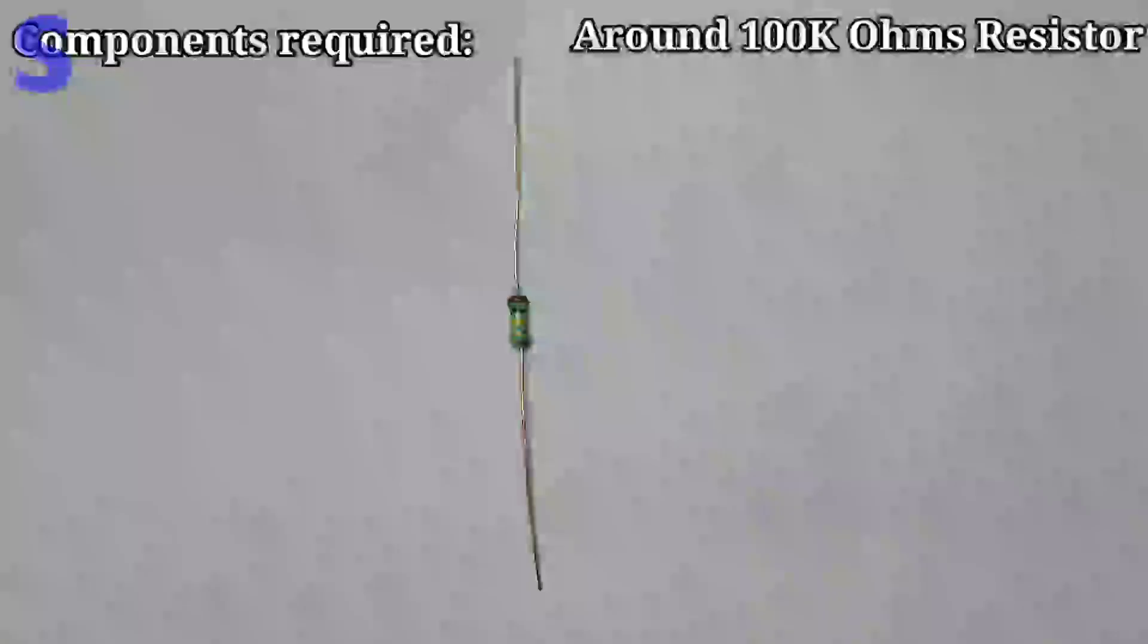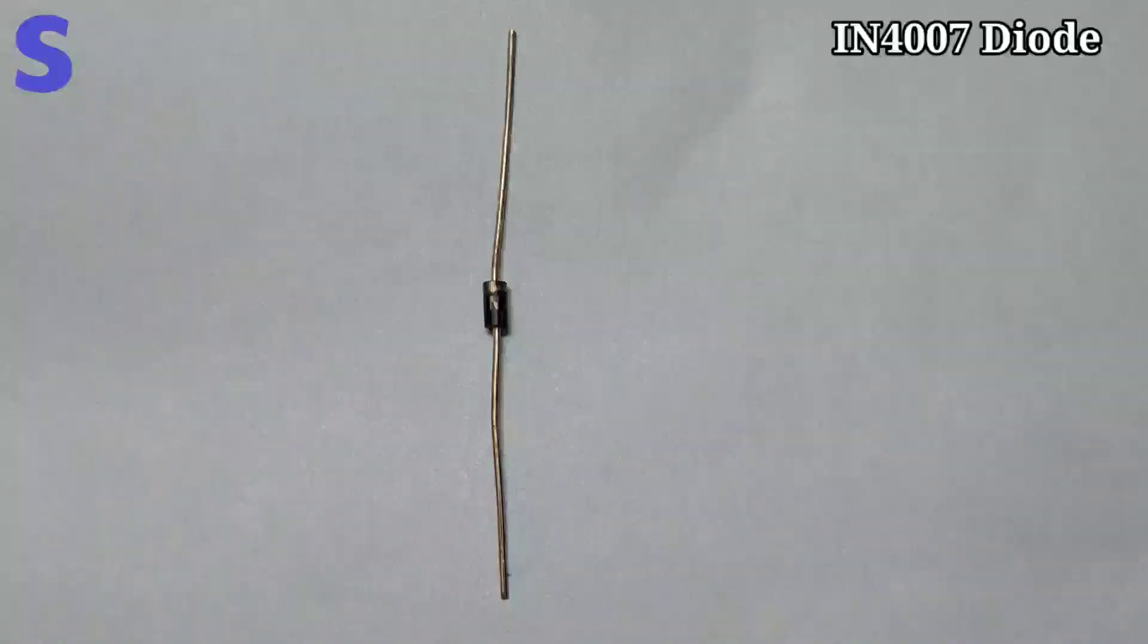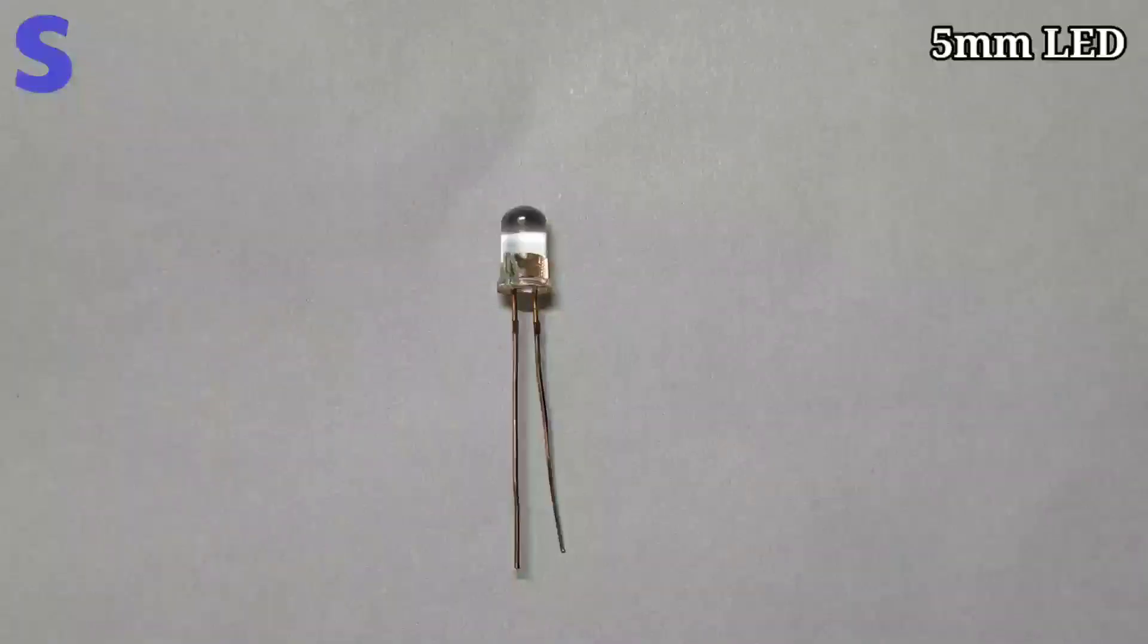For this you will need a 100k ohm resistor, a 1N4007 diode, and a 5mm LED light.